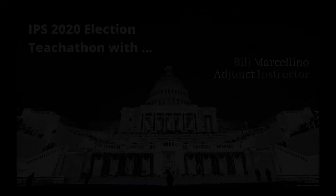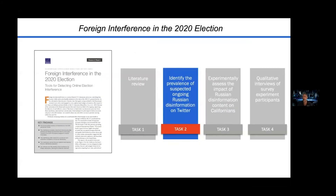Essentially, the state of California asked us to do an election security project. We had four tasks in the project. My team led a task to push forward scalable analytic methods to try and detect in the wild and in time any foreign election interference efforts happening over social media.